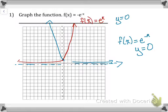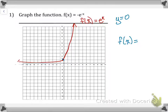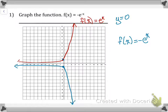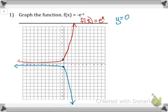Now I am going to erase the blue and talk about what happens when we put the negative in front of the e. So now I have negative e raised to the x power. What happens is it flips across the x-axis — the point (0, 1) goes to (0, -1). My asymptote is still y = 0. What I've done is reflected the graph across the x-axis, and my asymptote is still y = 0.